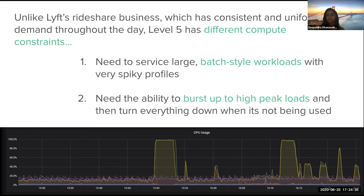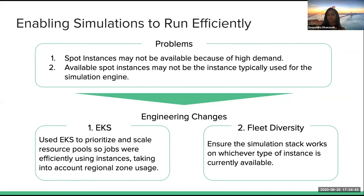They decided to switch to spot instances, which are a lot less expensive. Spot instances are basically unused on-demand instances, so they're cheaper, but you cannot guarantee that they'll be available when you request them. And even if instances are available, it might not be the type optimized for your specific use case — it might be different hardware than what you're used to running. So to make sure productivity and functionality would remain top-notch, Level 5 had to make two major engineering changes.